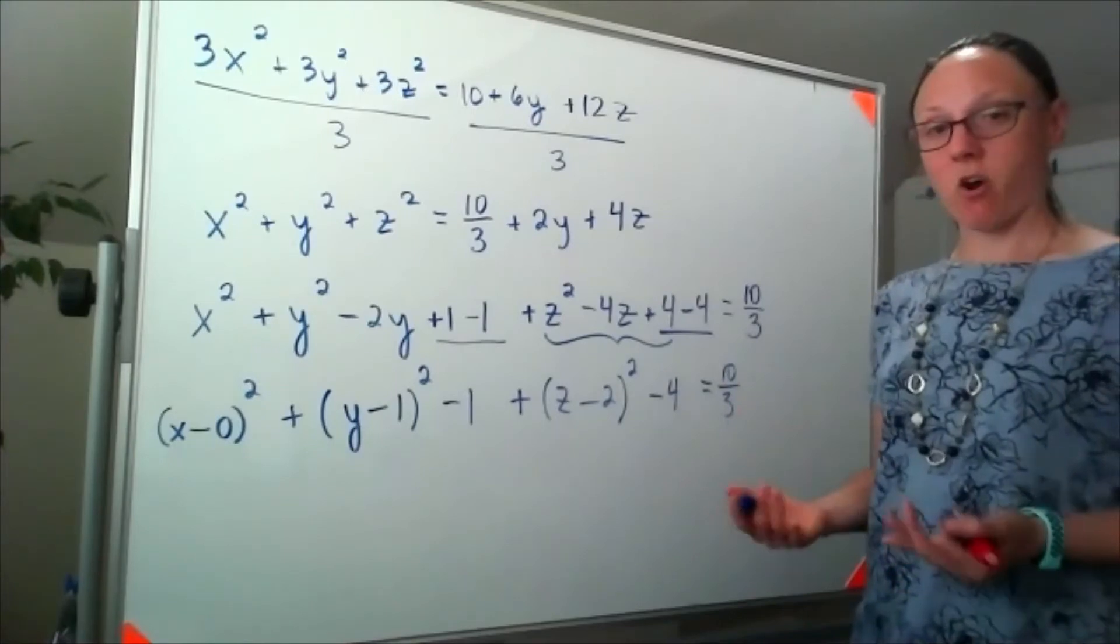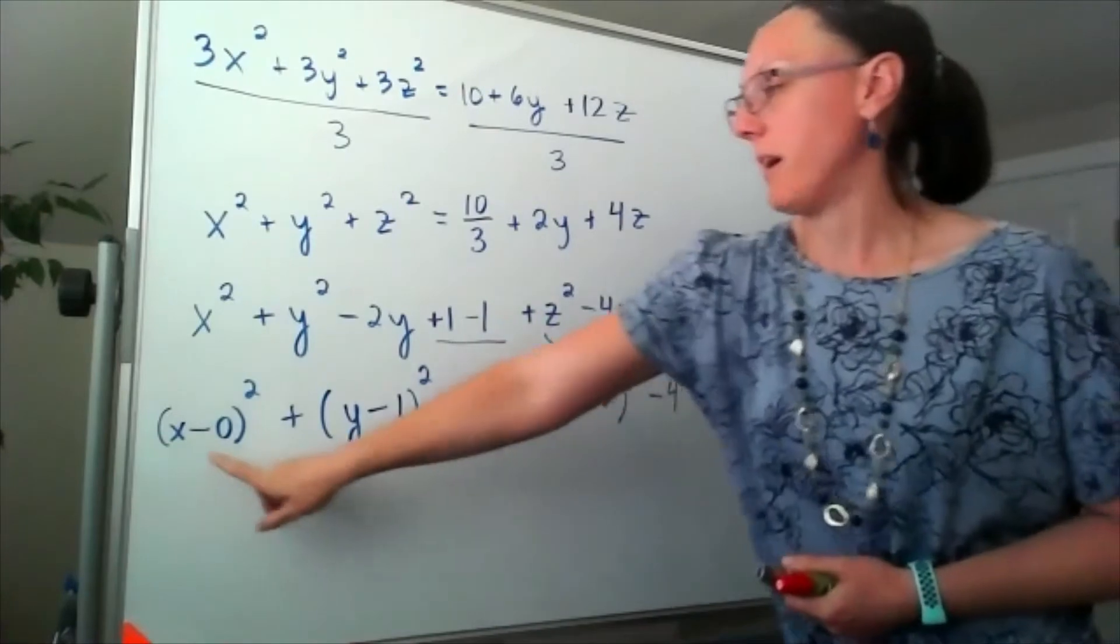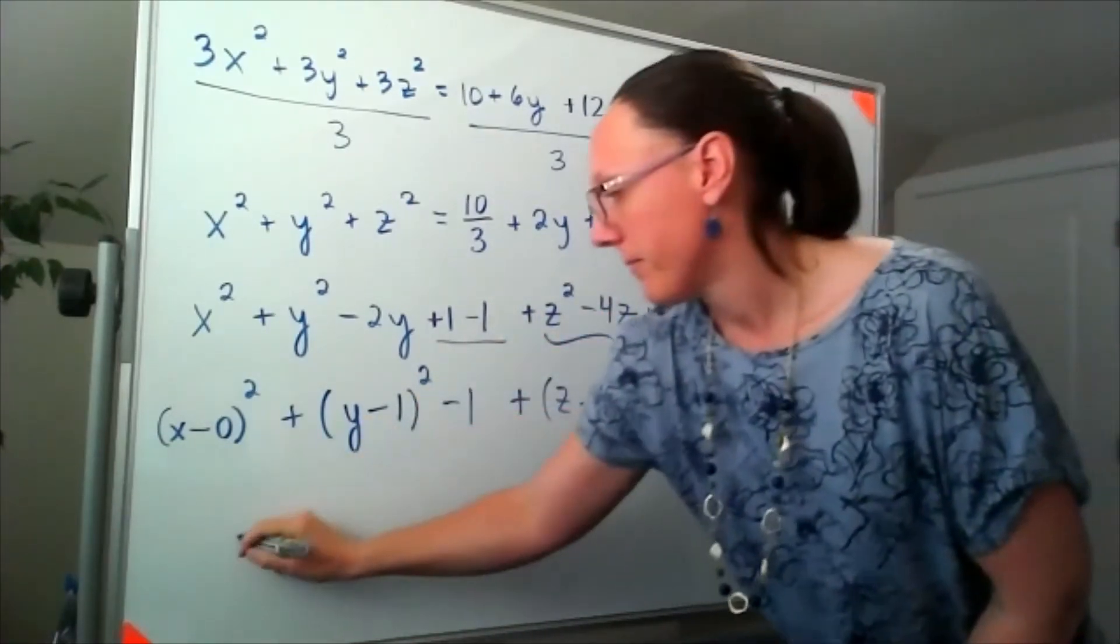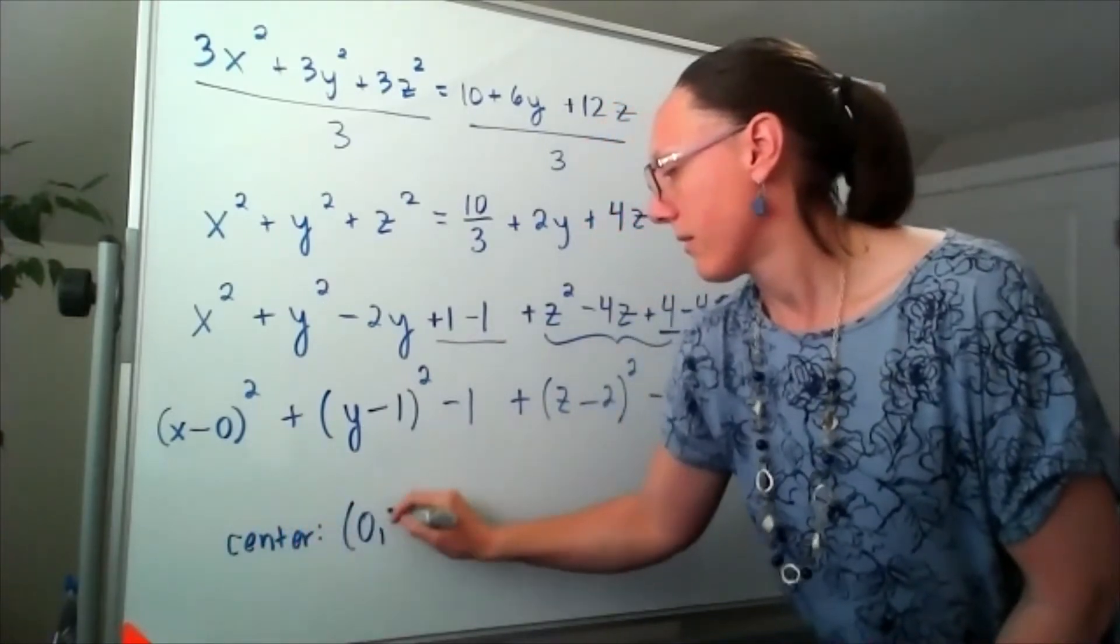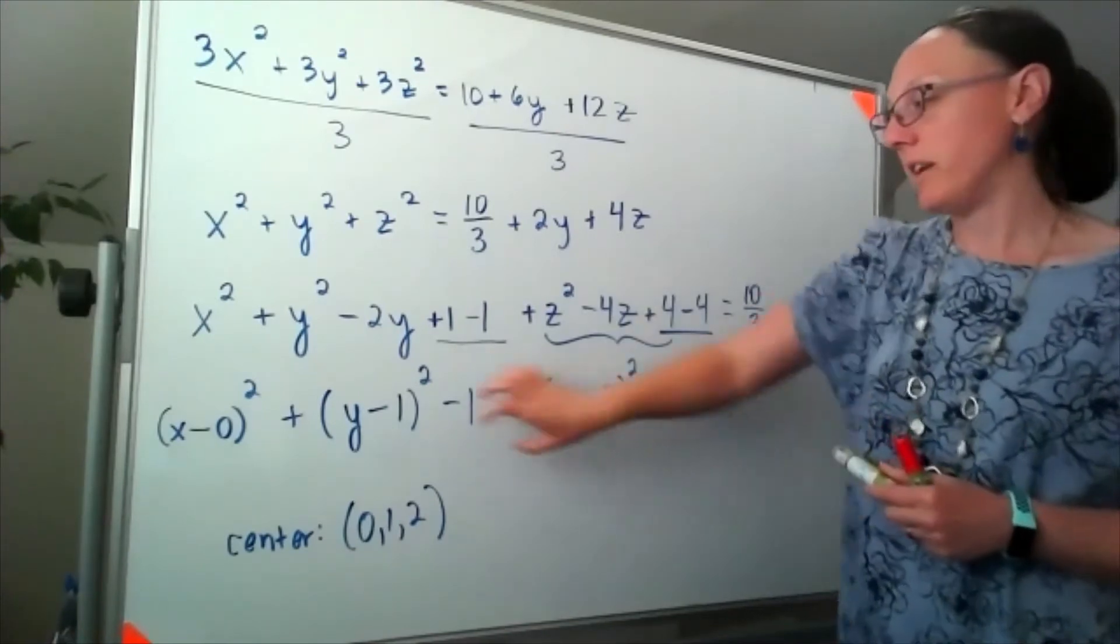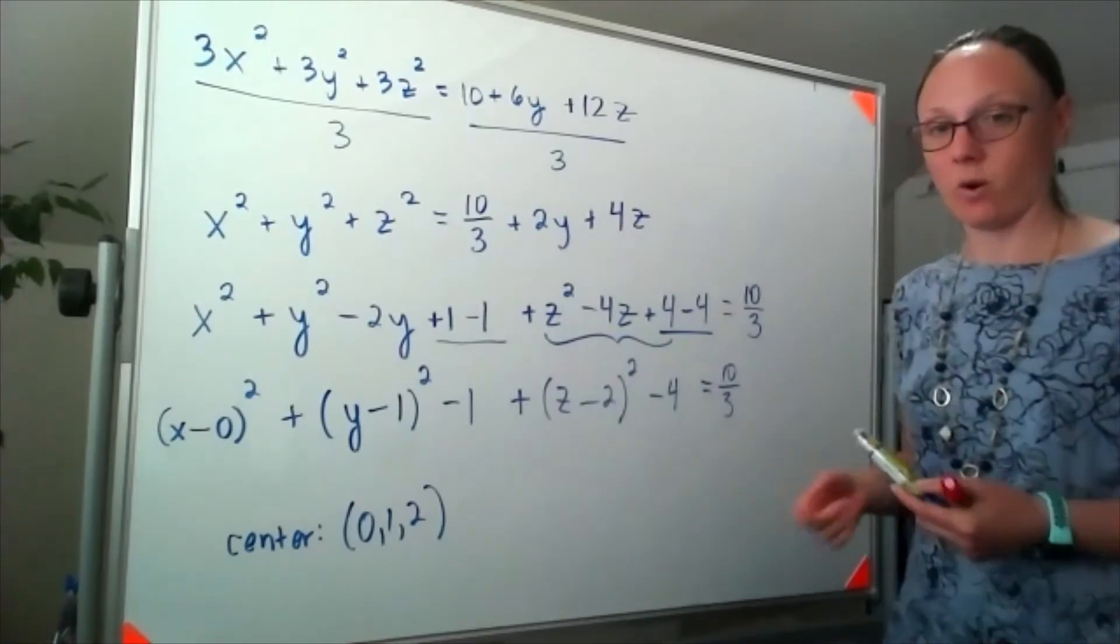So we can actually already see where the center of the sphere is. So my center, I mean sphere, is going to be at 0, 1, 2. But for our radius, we need to collect all of the numbers over to the right-hand side and then take the square root.